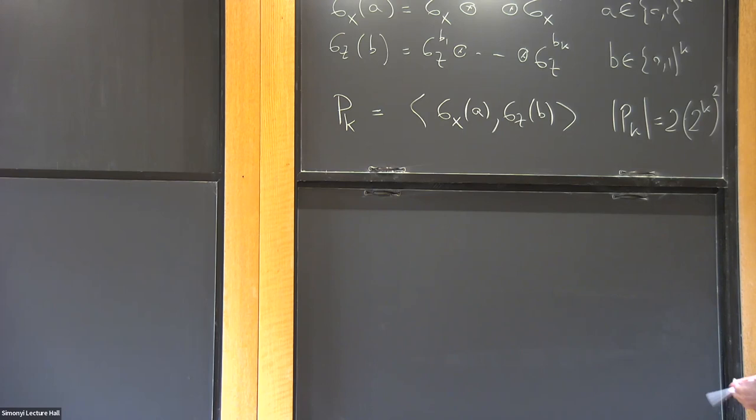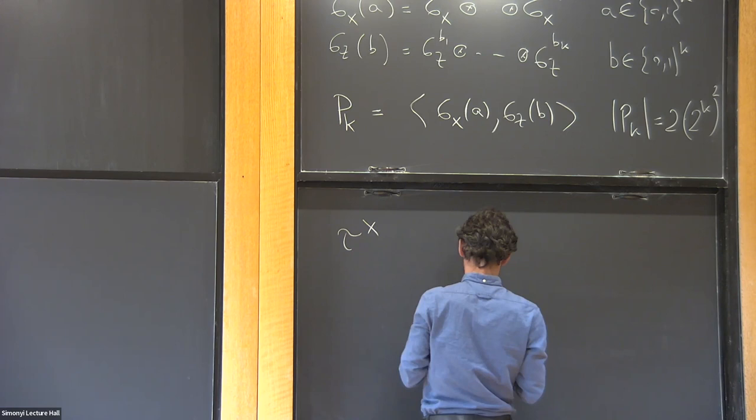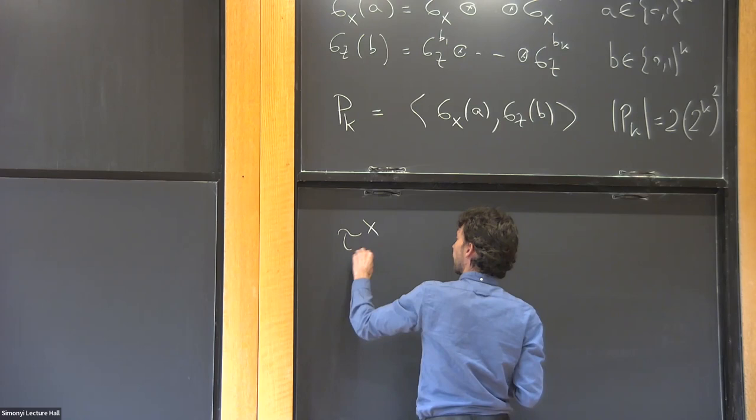There's one more piece of notation I need. I define tau-x and tau-z operators.